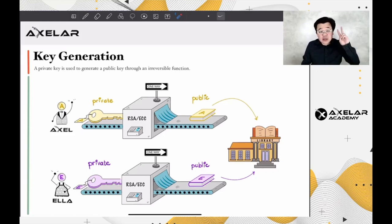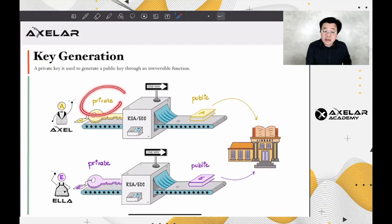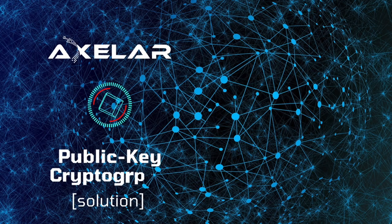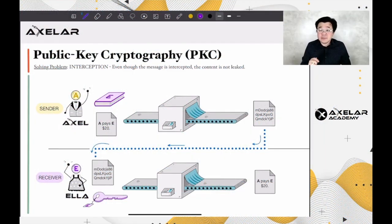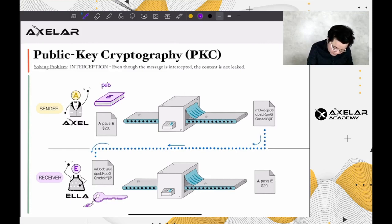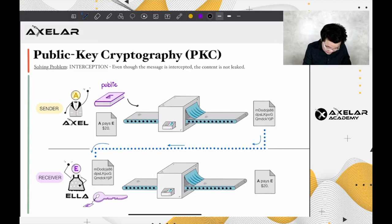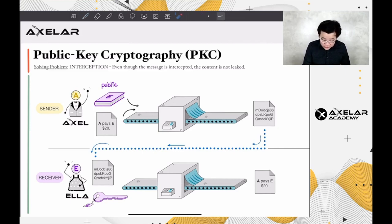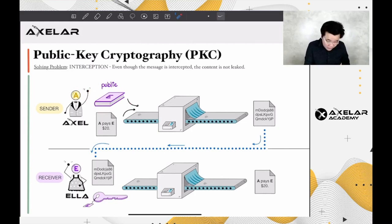In short, each person has two keys that are asymmetrically linked: a public key that is known to everyone, and a private key that only the owner knows. Let's see how the previous issues can be resolved. The first problem is message encryption. Axel takes Ella's public key, which everyone knows, and inserts it into a function with his message. It's like Axel uses Ella's instructions to encrypt the message. The result will be an encrypted message which looks like gibberish to the naked eye. Keep in mind that Axel's function requires two inputs: the destination public key and the message itself. If Axel alters the message content, the encrypted message will change as well.